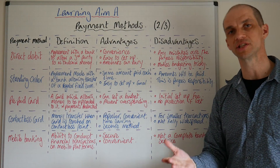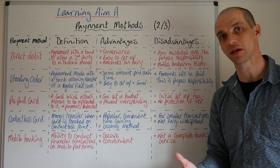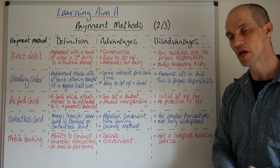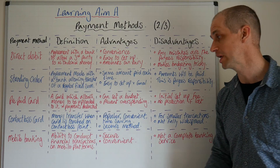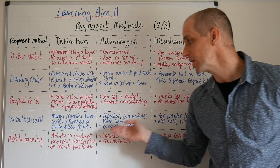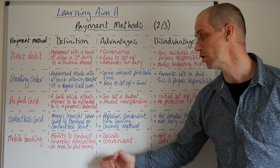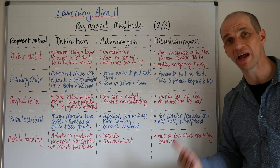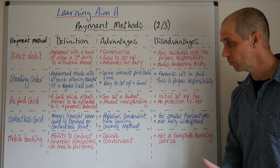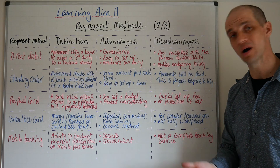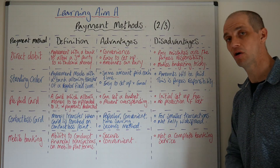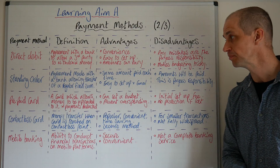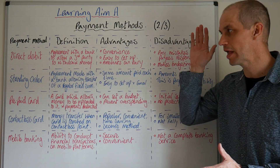Finally, mobile banking. When you have a bank account, you'll likely get a mobile banking connection, which can be very useful for things like checking your balance, making payments, and keeping on top of your finances. It's the ability to conduct financial transactions on mobile platforms — it's secure and convenient. The downside is that it's not a full banking service; for instance, if you were given a cheque, there's not much you can do with mobile banking — you'd need to go into a branch or post it off if your bank offers that service.